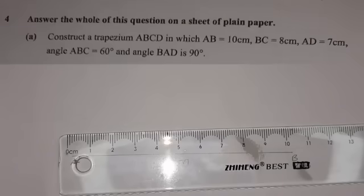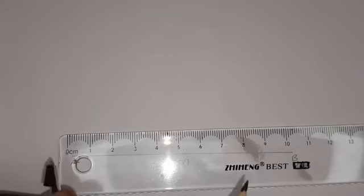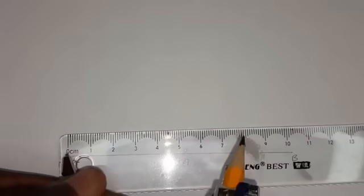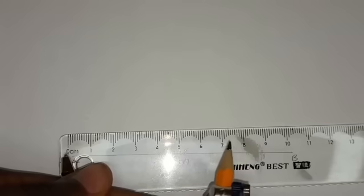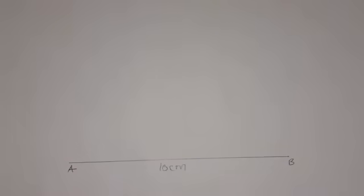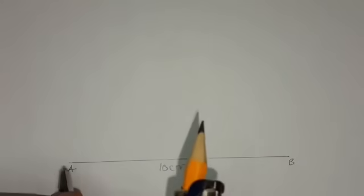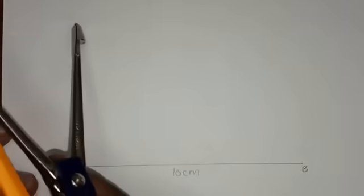AD is 7 centimeters, so you also collect measurements on the ruler using a compass — 7 centimeters. Because they're saying AD, D must be somewhere up here. With the measurements collected, put your compass point at A and draw a faint arc. This is the possible position of D.